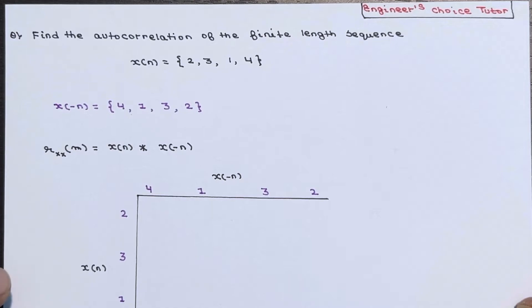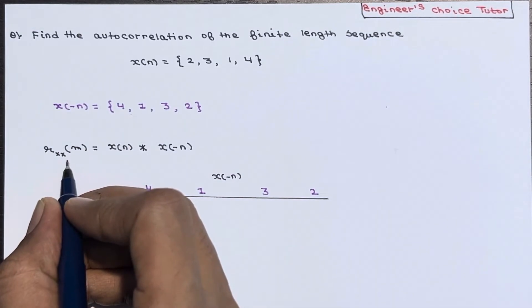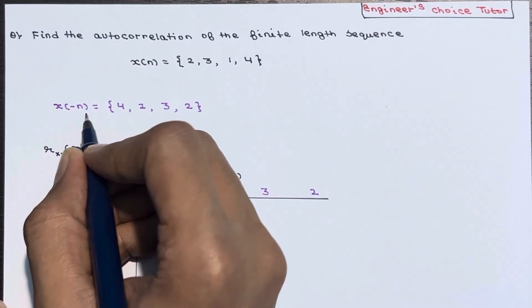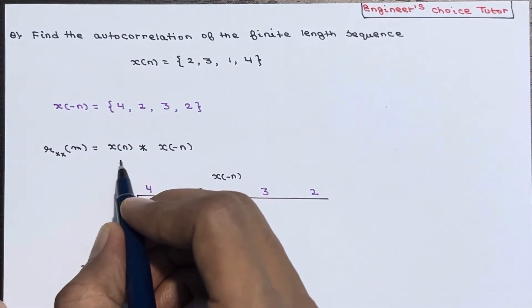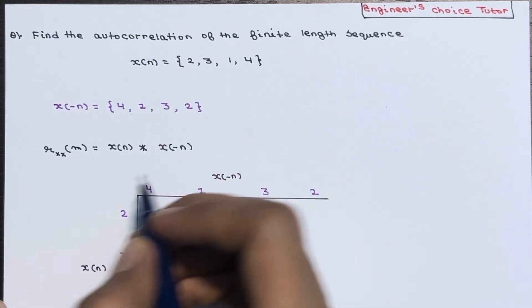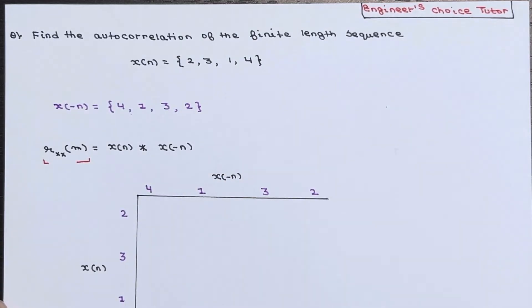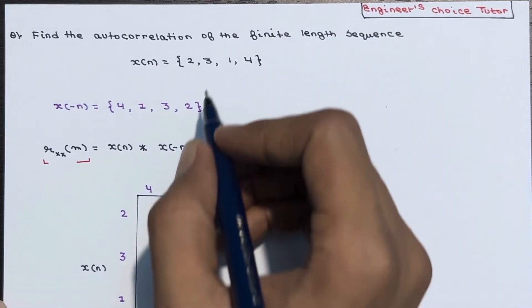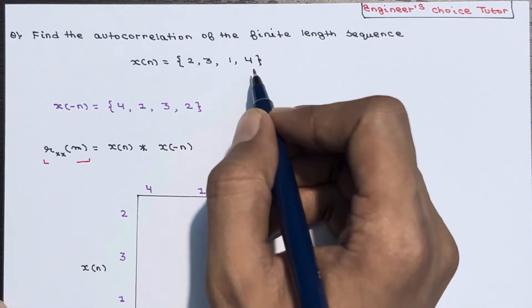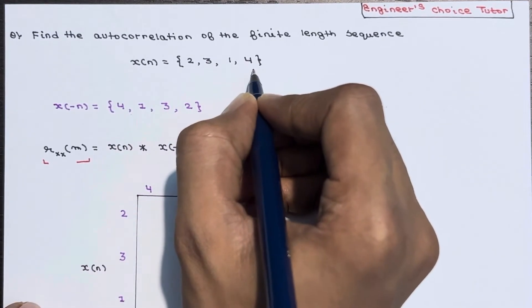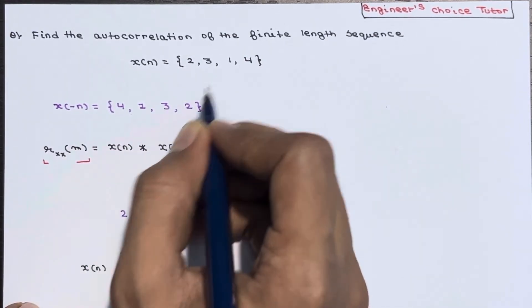In case of autocorrelation, to get the autocorrelation r_xx(n), first you have to fold the sequence x(n) to obtain x(-n). Then the convolution of x(n) and x(-n) gives the value of this particular autocorrelation. So first you have to fold, this means you have to calculate x(-n). Simply if you want to fold, you start from this side like this: 4, 1, 3, 2.